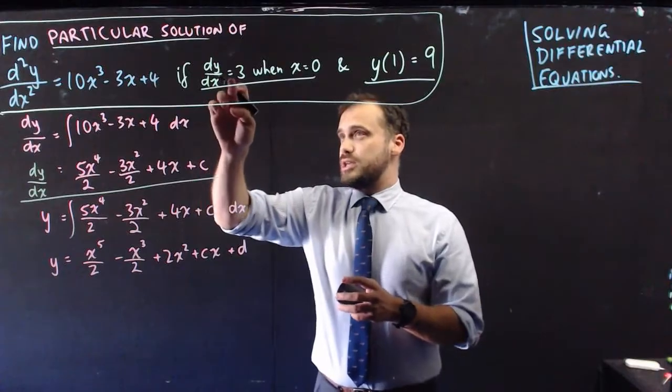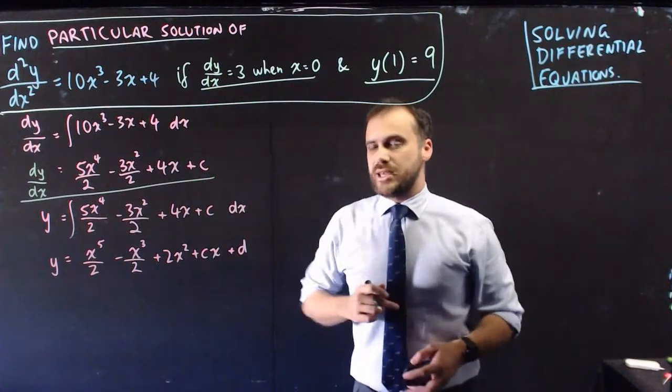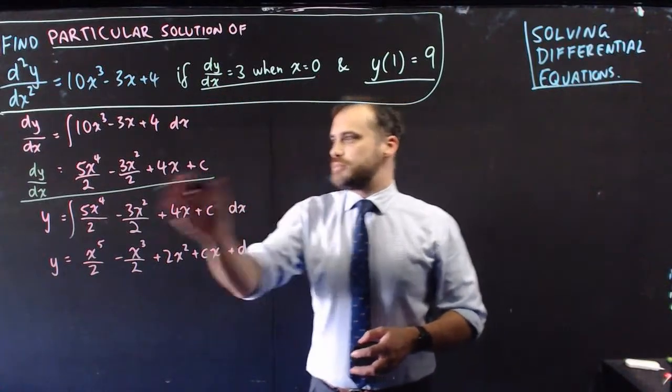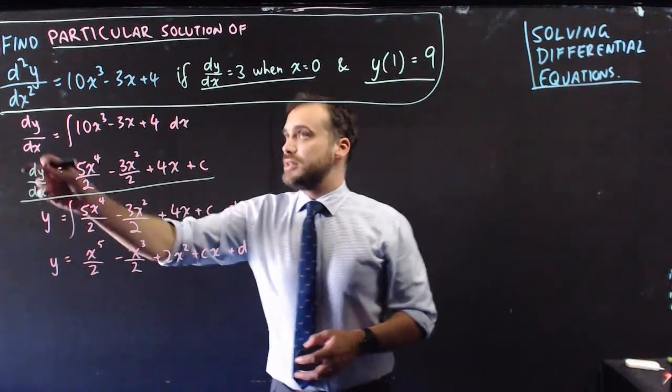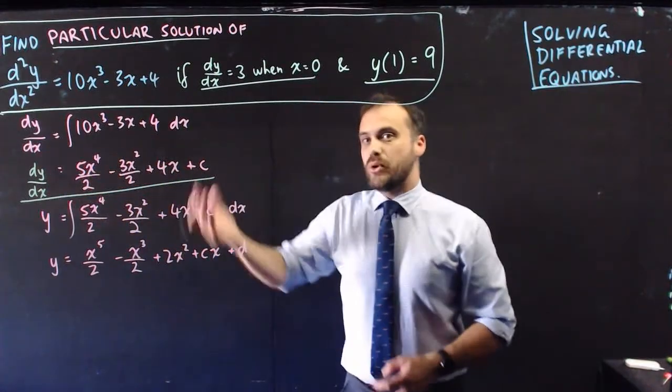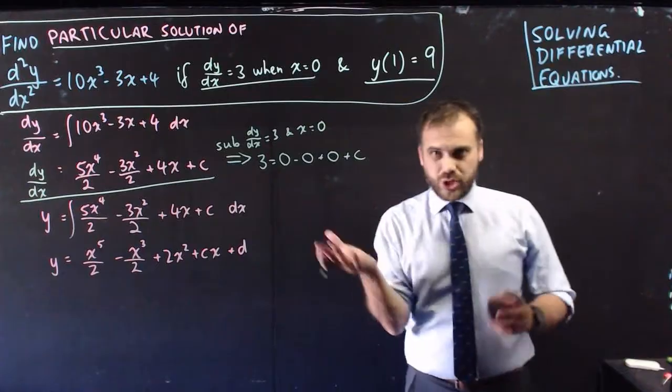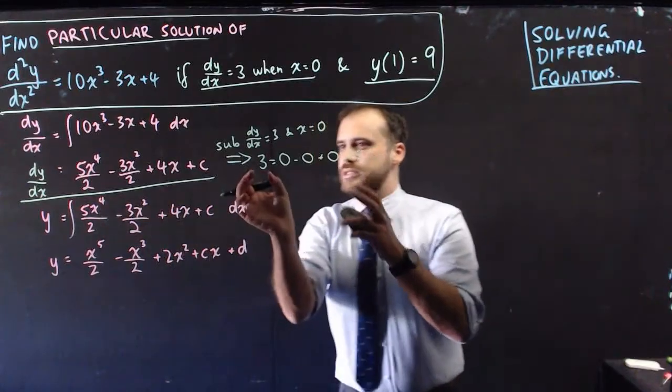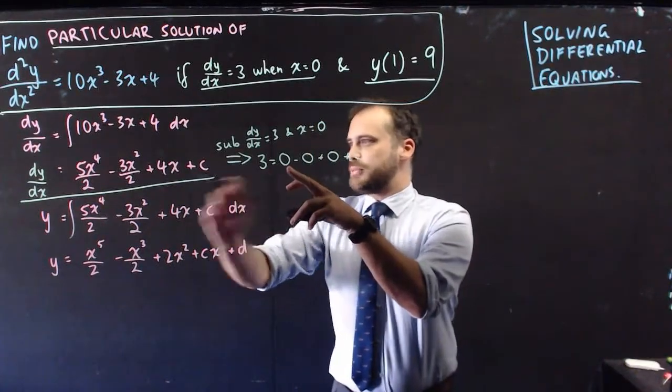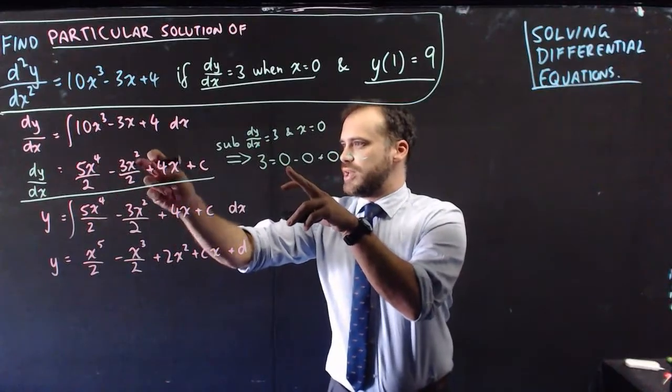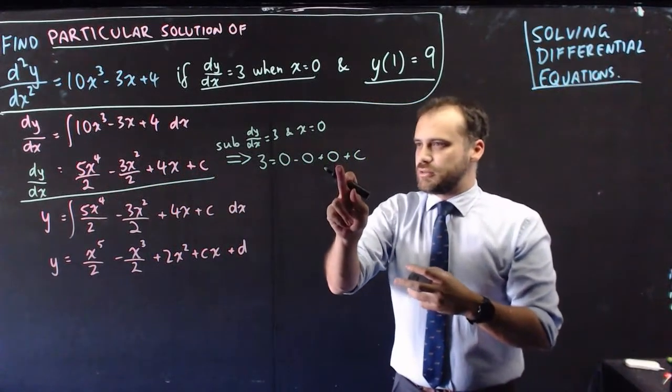I know that dy/dx equals 3 when x equals 0, so I can sub 0 in here, and sub 3 in for dy/dx. Now when I do that, it's pretty obvious what happens. dy/dx is equal to 3, subbing 0 in for x, 0 in for x, and 0 in for x is a 0, a 0, a 0, and a 0.